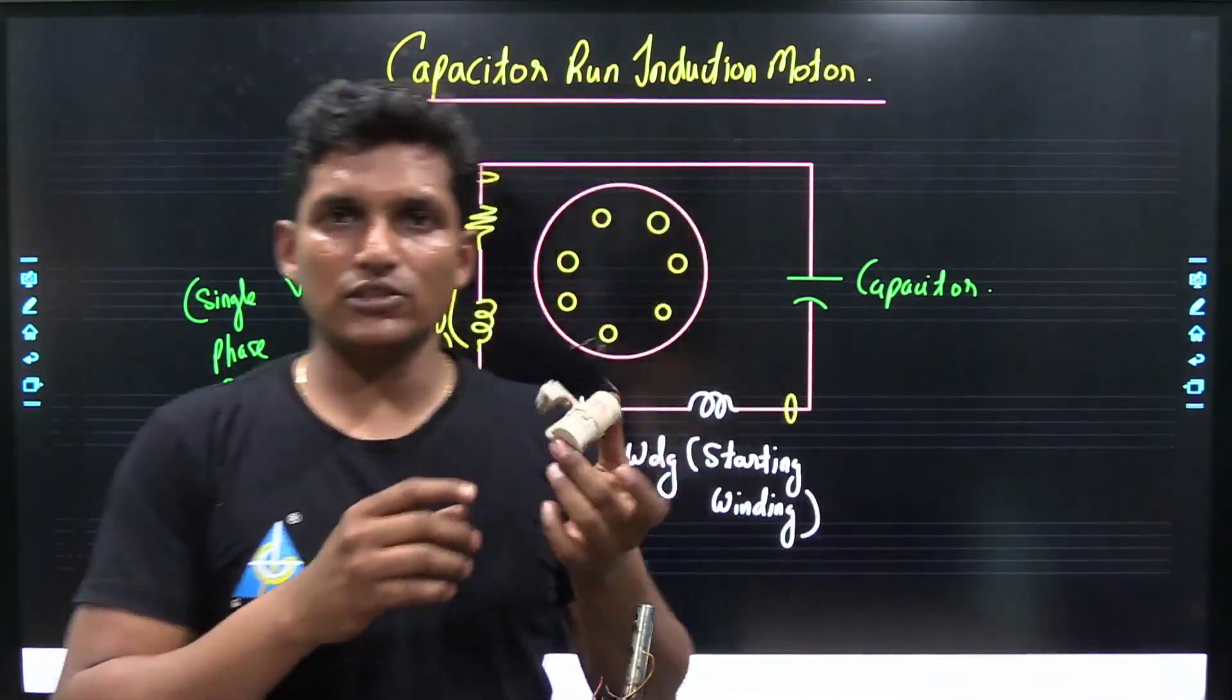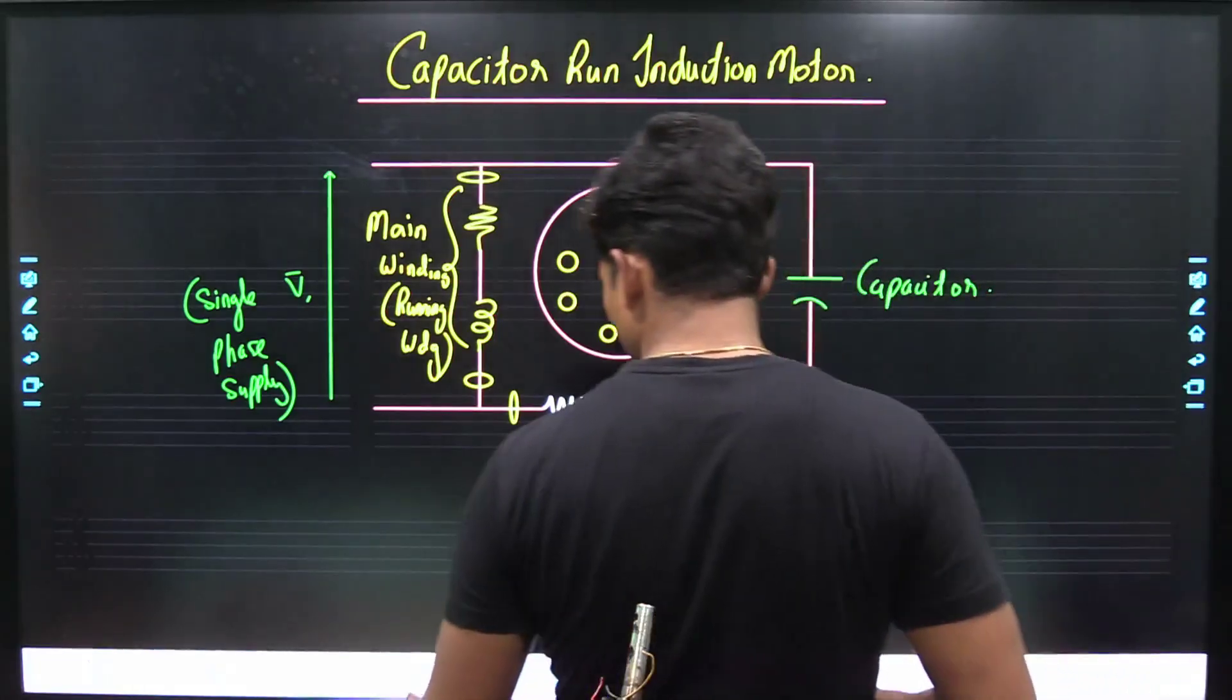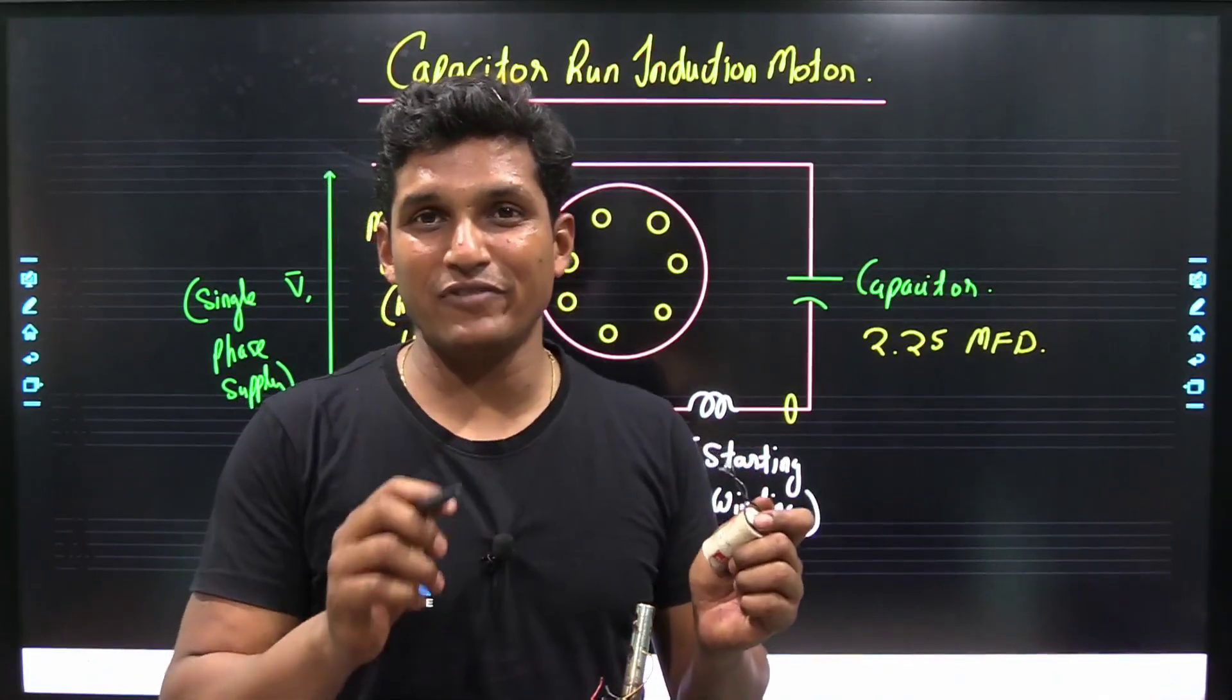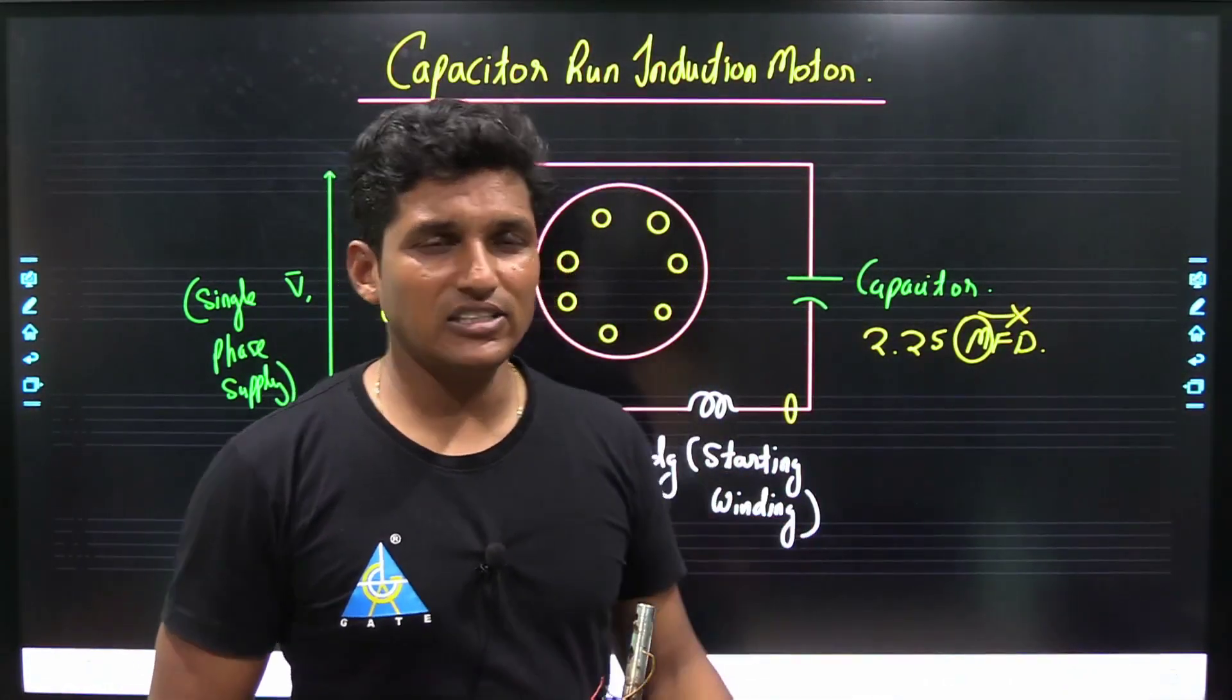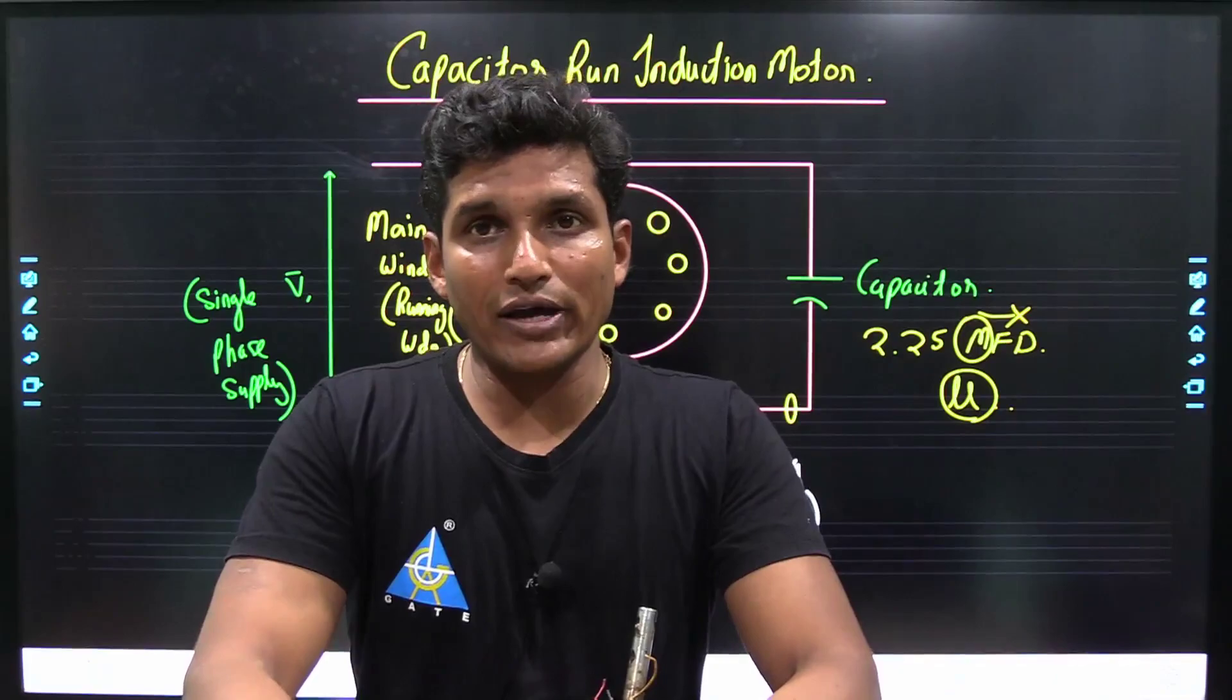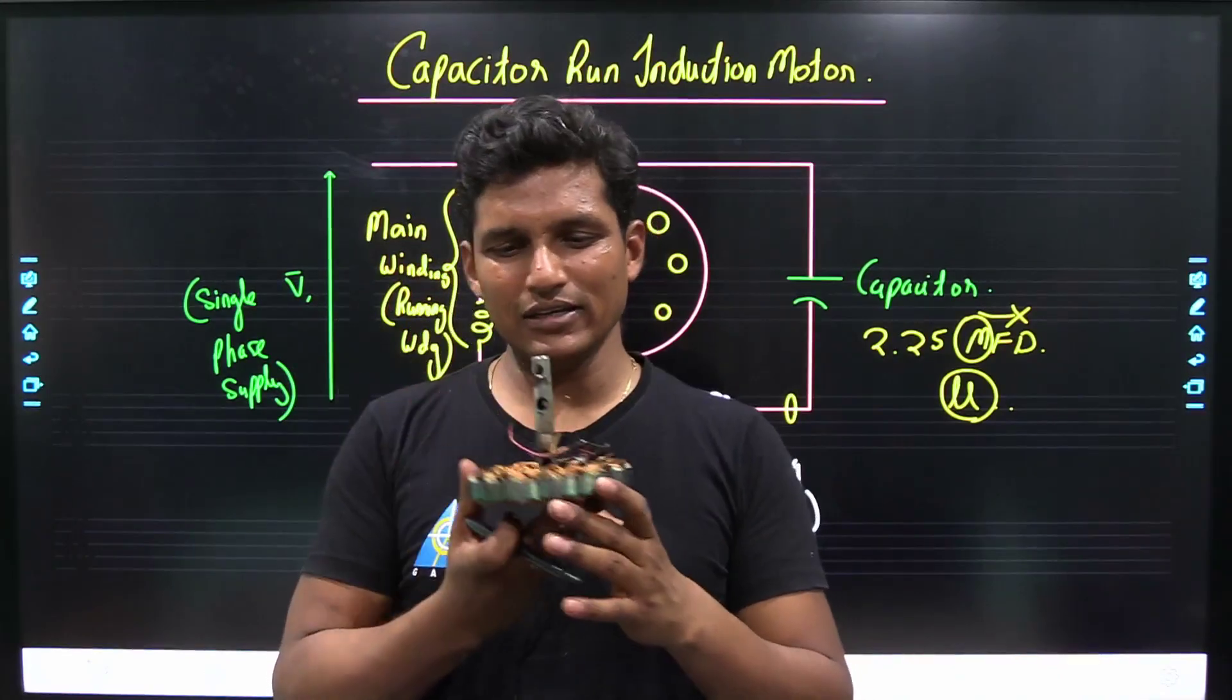Here is the capacitor which is used for the capacitor run induction motor. Its value is around 2.25 MFD. Capital MFD means what? It is not mega farad. That word is only used for electricians because electricians sometimes do not know about the symbol that is used for micro farad. Basically, the value of this capacitor is 2.25 micro farad. 3.15 micro farad is also used for the motor for ceiling fan. So this is the motor which is used in the ceiling fan.